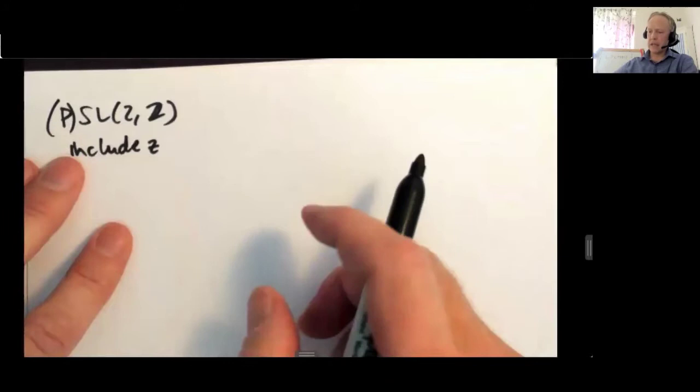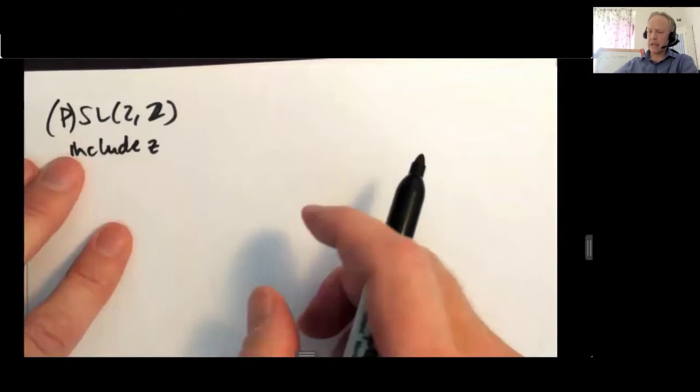So depending on whether or not you have a marked point, you may or may not have the p here. But in any case, I will not be too particular about that right now. This is called gamma for modular.